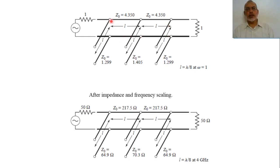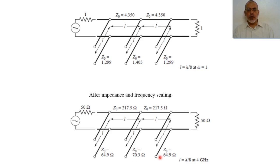Now, by applying the characteristic impedance Z0 equals 50 ohm, we are going to multiply every term by 50. So the characteristic impedance of the first line section would be 4.35 multiplied by 50, which is 217.5. This transmission line section is 1.299 multiplied by 50, which equals 64.9. And 1.405 multiplied by 50 gives 70.53. We now have the characteristic impedances of the different transmission line sections of the proposed filter.